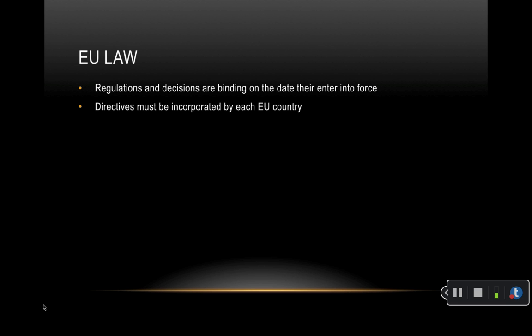Regulations and decisions become binding automatically throughout the EU on the day they enter into force. Directives must be incorporated by EU countries into their national legislation. If national authorities fail to properly implement EU laws, the Commission can launch a formal infringement procedure against the country in question. If the issue is still not settled, the Commission may eventually refer the case to the European Court of Justice.